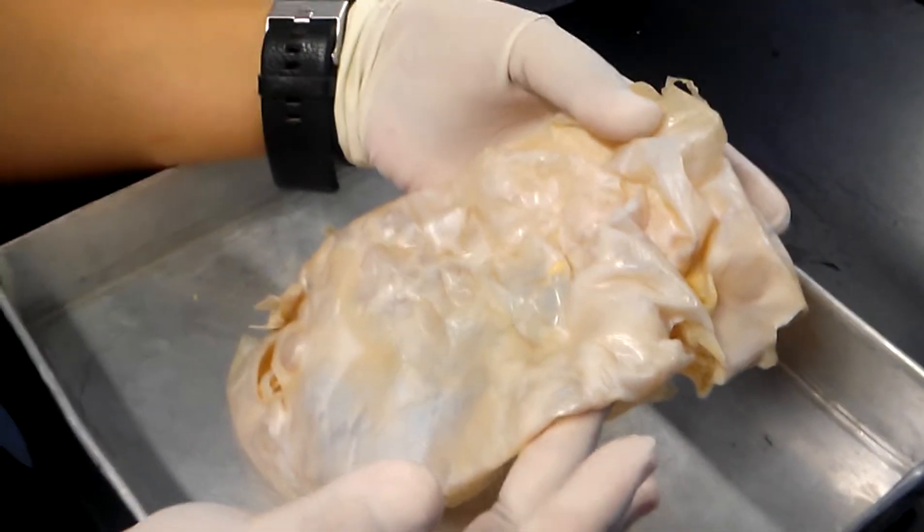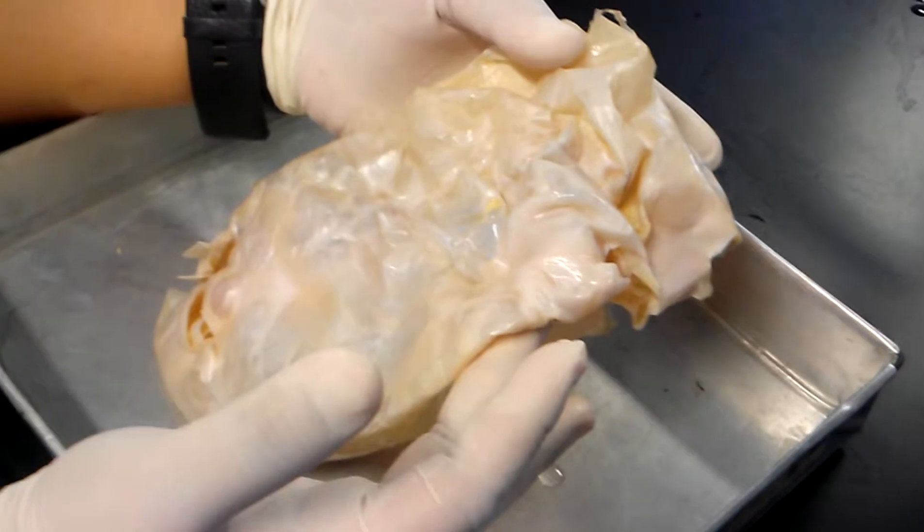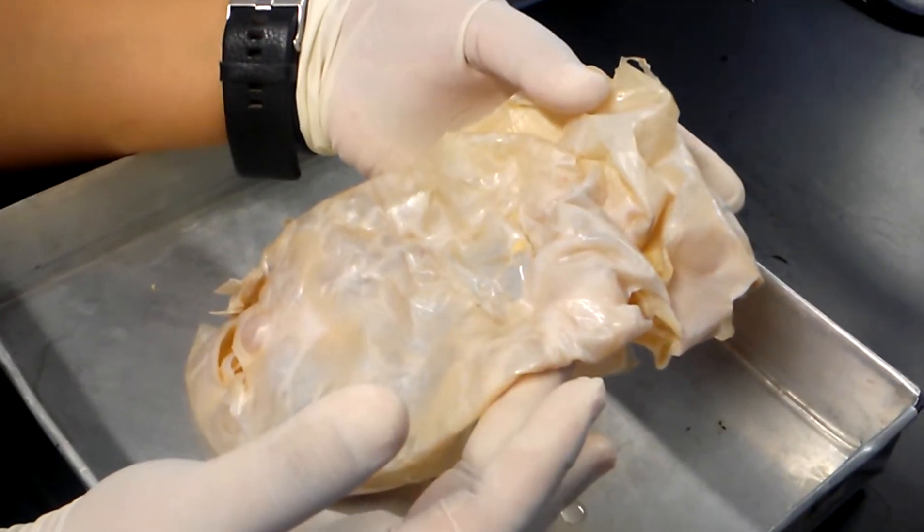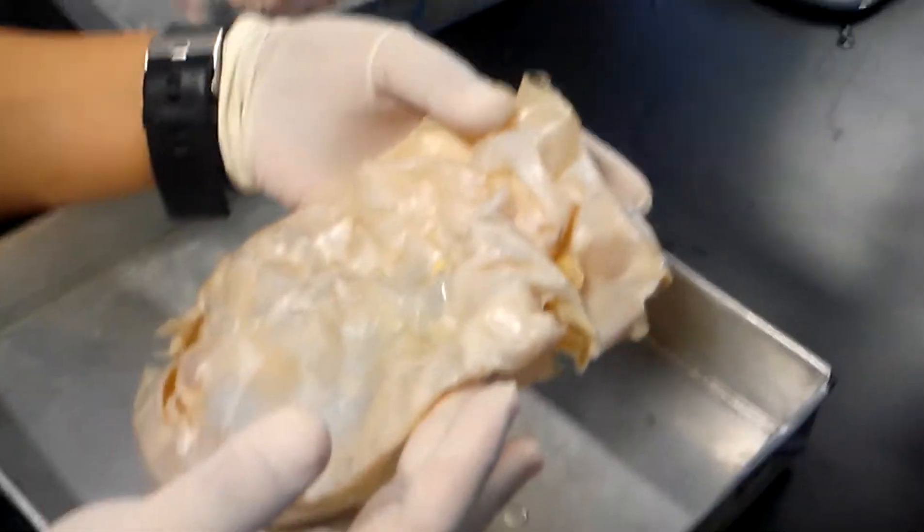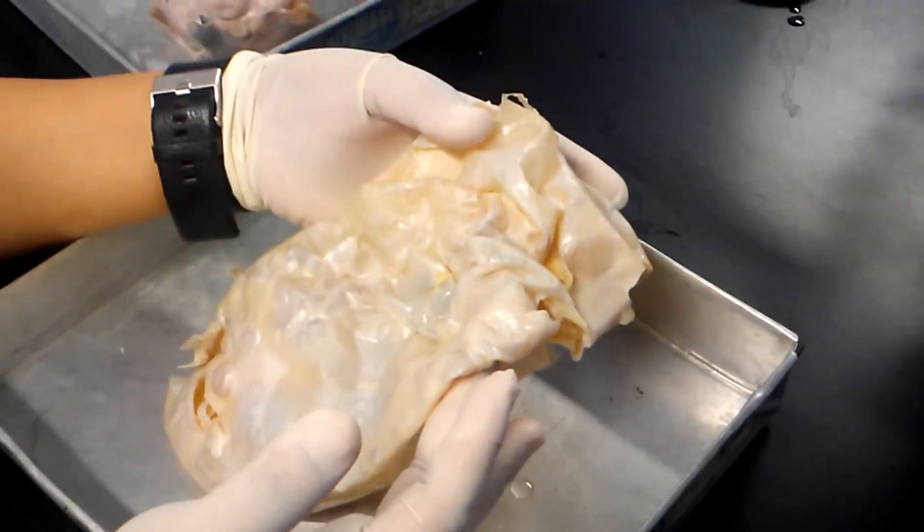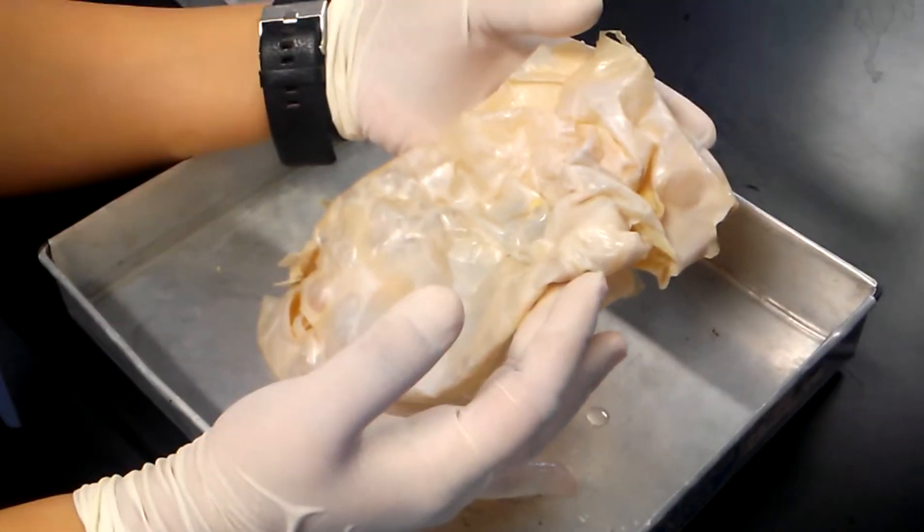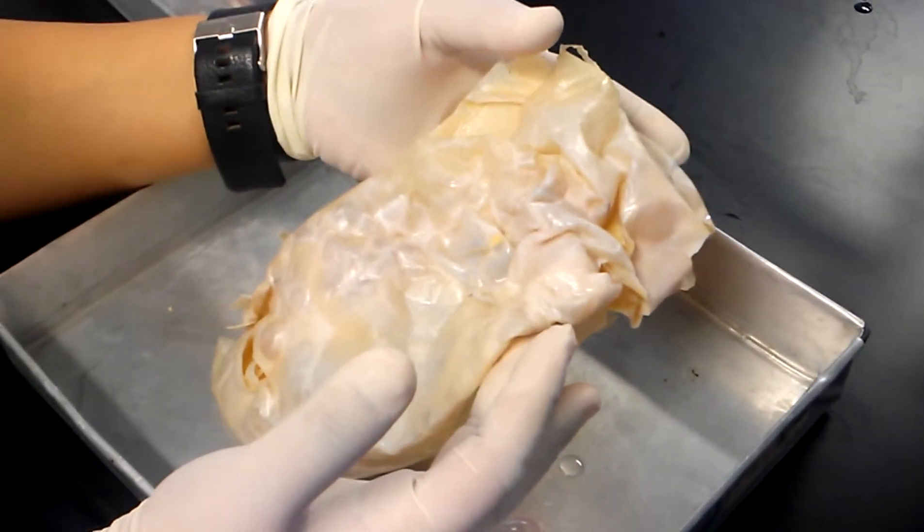If it's only one locule or one cystic space, we call it mucinous cyst. Two or more, or mucinous cyst. If there are two or more locules, you call it mucinous cystadenoma.